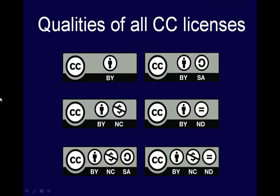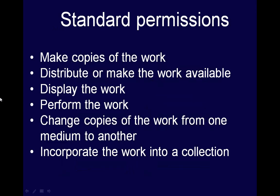Let's jump into a more in-depth description of the licenses themselves, since this is important in understanding what it means to license your work or use someone else's Creative Commons licensed work. First, there's a set of permissions that apply to each and every Creative Commons license, no matter if you choose the most restrictive or most liberal license. All Creative Commons licenses give users permission to make copies of the work, to distribute or make the work available online, to display the work, to perform the work, to change copies of the work from one medium to another, and to incorporate the work into a larger collection.